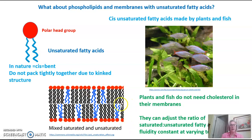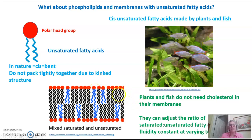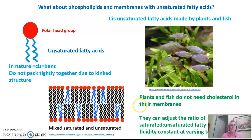Looking at this membrane diagram, it has a mix of saturated and unsaturated fatty acids. If a fish or a plant was in a very cold environment, you would perhaps see a larger ratio of unsaturated fatty acids, giving more room and more ability to stay fluid in cold temperatures. Whereas in a warm temperature, you might see a higher ratio of saturated or straight fatty acids that pack more tightly together to maintain membrane fluidity. Because plants and fish can adjust their ratios, they do not need to use cholesterol to maintain their membrane fluidity and integrity.